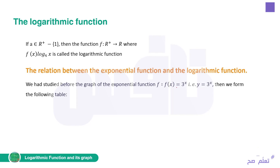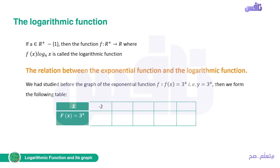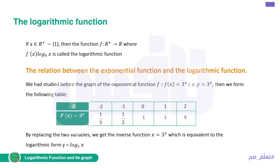We can replace f(x) with y, giving y equals 3 to the power of x. Then we form a table with x values: negative 2, negative 1, 0, 1, 2, and compute y by direct substitution. So 3 to the negative 2 equals 1/9; 3 to the negative 1 equals 1/3; 3 to the 0 equals 1; 3 to the 1 equals 3; 3 to the 2 equals 9. To find the inverse function, we swap x and y, giving x equals 3 to the power y, which is equivalent to y equals log base 3 of x.